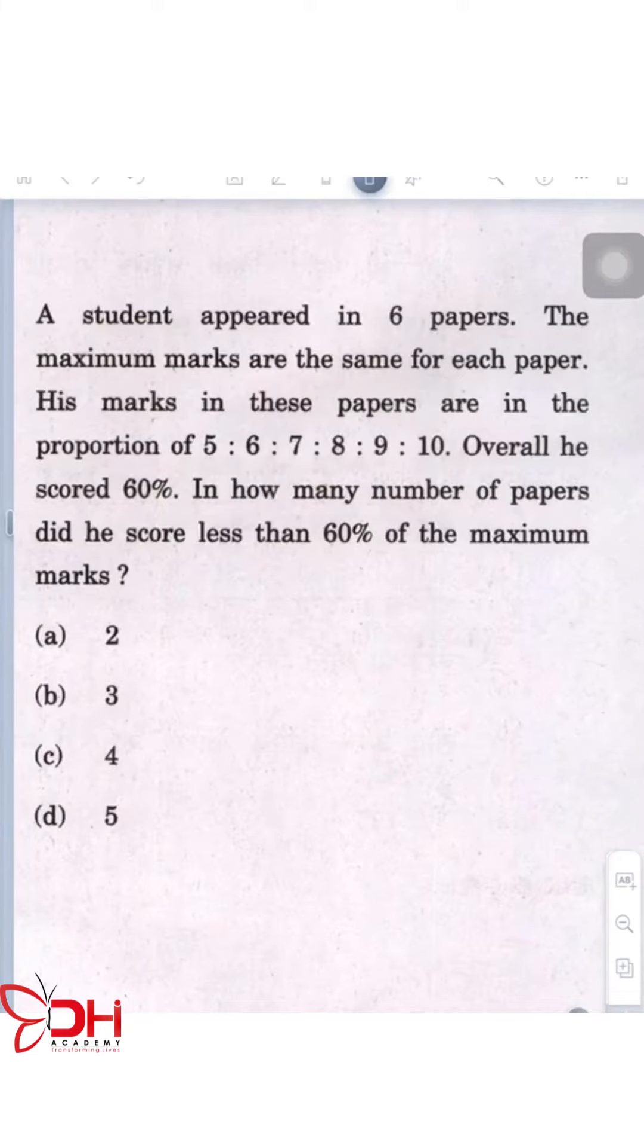A student appeared in six papers. The maximum marks are the same for each paper. His marks in the papers are in a proportion of 5:6:7:8:9:10. Overall, he scored 60%. In how many papers did he score less than 60% of the maximum marks?